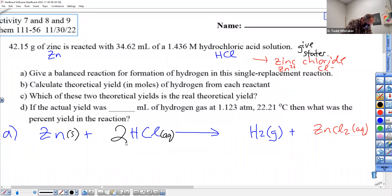So, calculate theoretical yield in moles in hydrogen from each reactant. So, one of the reactants is zinc, and you took 42.15 grams of it. You can't go moles to moles until you have moles. Does that make sense at all? We got to get the moles first. Got to get rid of grams and get me some moles.